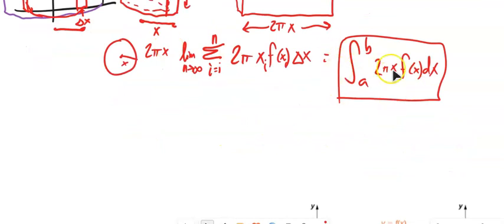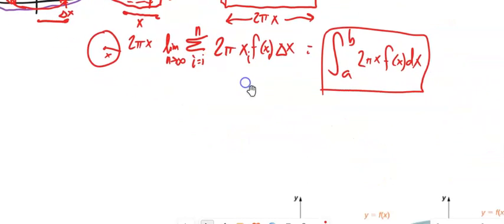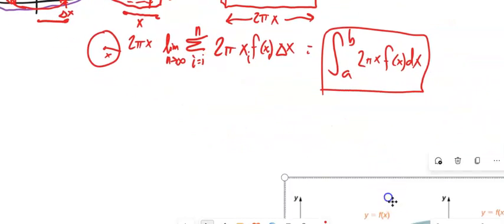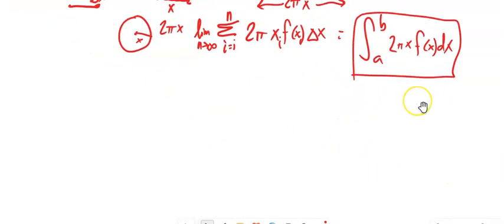This is our basic formula for when we are rotating around the Y-axis. Notice what's nice about this is we're rotating around Y, but we're solved for x — we don't have to switch it over to being solved for y. You can do it that way, and sometimes this way is more efficient. Sometimes it's not. Let's dig into a couple of examples.